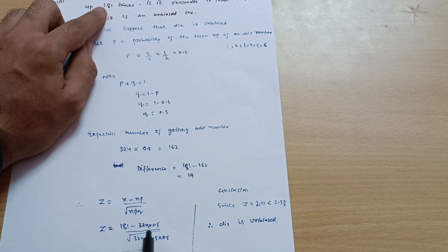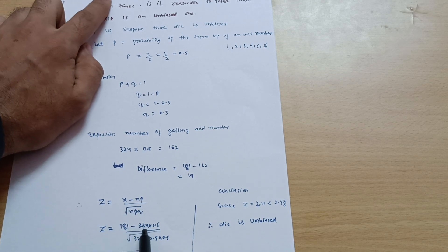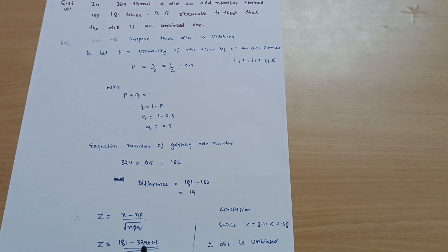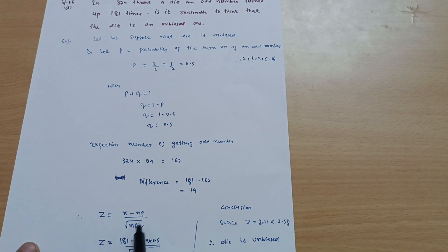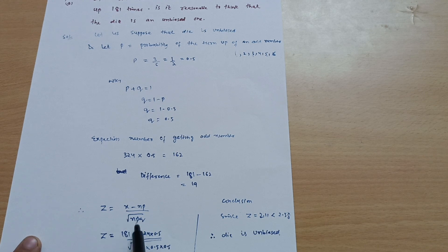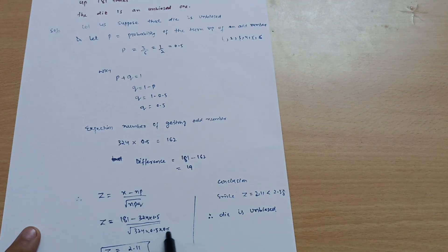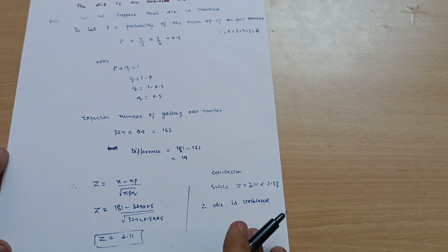So z is equal to: in the question odd number is turning up 181 times, so x value is 181 minus n value, which is how many times the die is thrown, that is 324, so 324 into 0.5, divided by root of n, n value is 324 multiplied by probability 0.5, q is 0.5. So 0.5 into 0.5, you will get z value as 2.111.